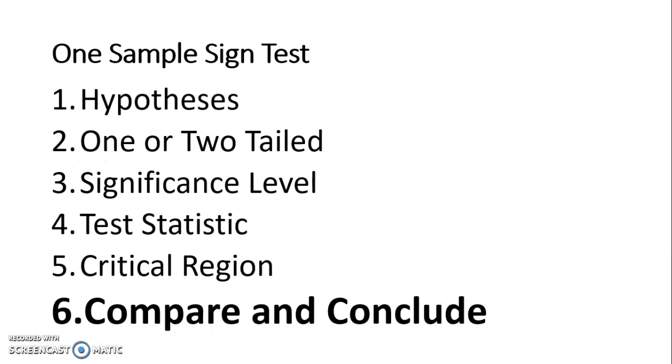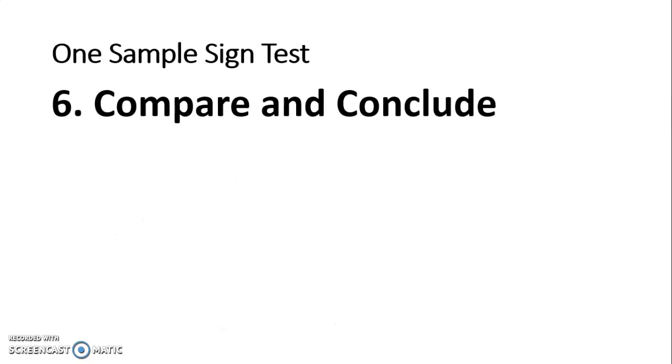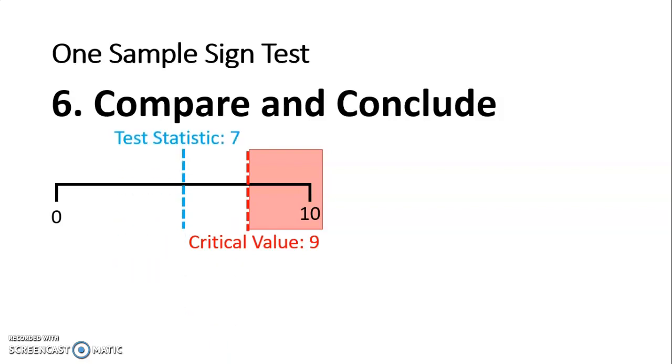So finally, we come to the compare and conclude. For my compare and conclude, I'm going to draw myself a number line going from 0 to N, and for this question, my N is 10. I'm going to draw on my critical value, which was 9, and we said the critical region, because this is a greater than question, is anything above or equal to 9. I've just shaded that in red, and that becomes my reject zone. I then flick back to my statistic and find that was 7, so I'm going to place that on there as well.